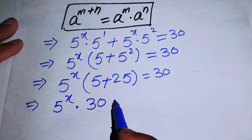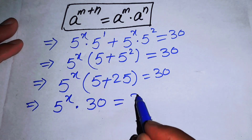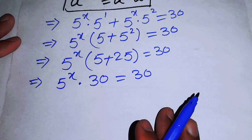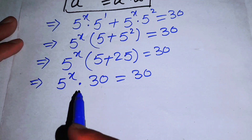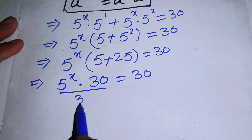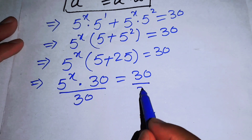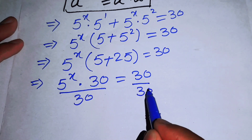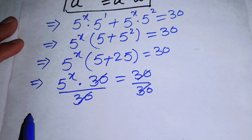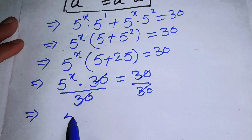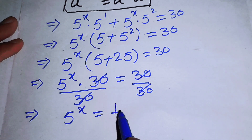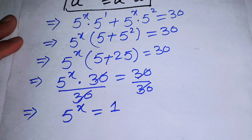Adding the two terms gives us 5 to the power of x times 30 equals 30. We then divide both sides by 30, so the 30s cancel, and we get 5 to the power of x equals 1.